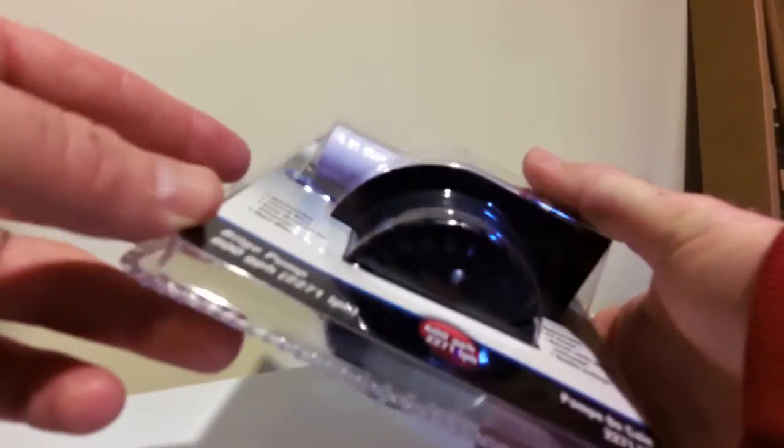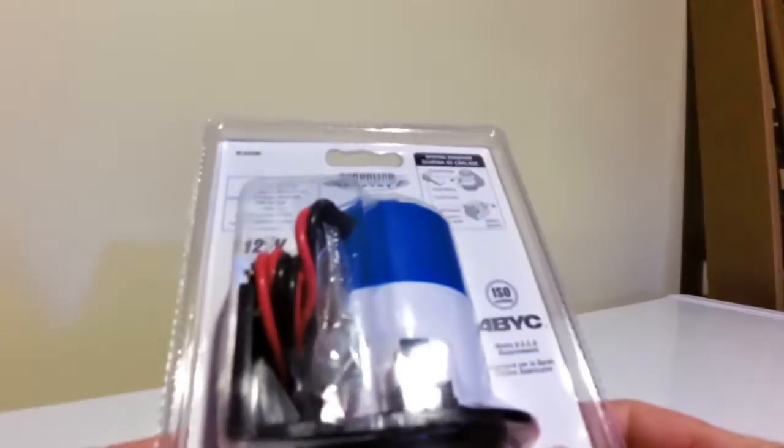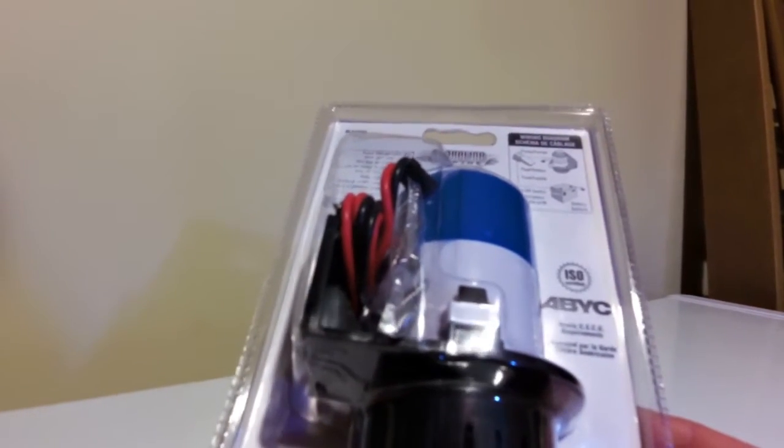This one does say it's good for salt and fresh water. Again, you can't really see it there, and it's hidden under there, but it says it's good for salt and fresh water. So that is handy and for an off-grid situation, three amps is not too bad. It's not the best, but this would not be a 100% duty cycle thing.